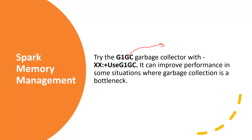Another quick point in terms of memory contentions is using the right set of executor parameters in terms of memory allocation for the particular Spark job — specifically in cases where you have shared clusters. There is a separate video on how to allocate executor parameters — check that out. That's it for this video, have a great day ahead, and don't forget to like, comment, and subscribe.